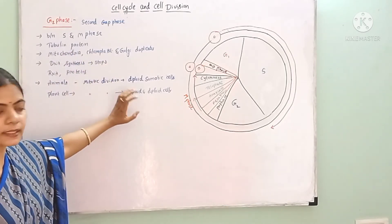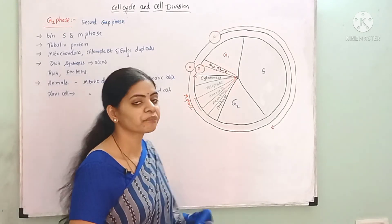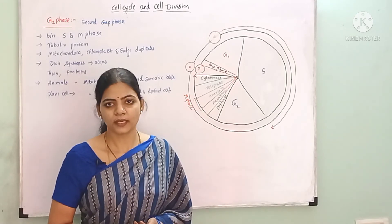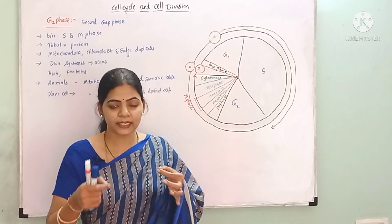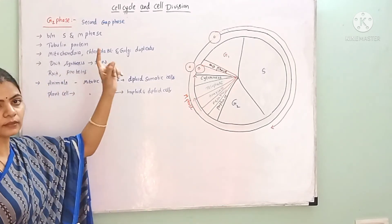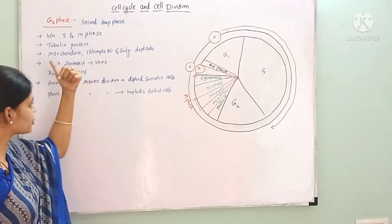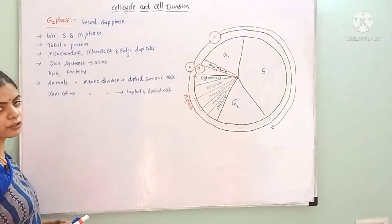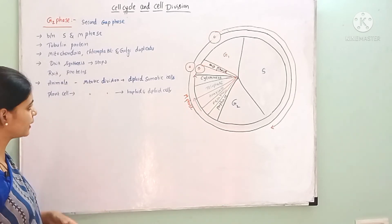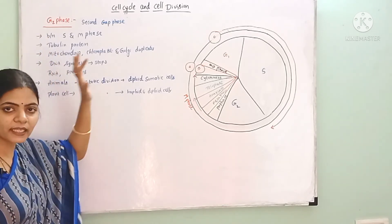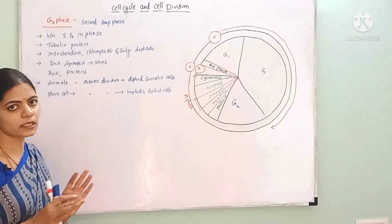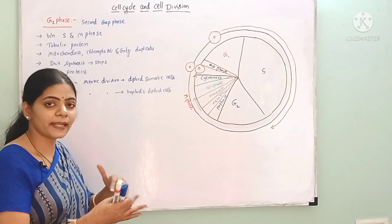In G2 phase, tubulin protein synthesis occurs. Tubulin protein is needed for spindle fiber formation. Chromosomes attach to the spindle fibers during cell division. In this phase, mitochondria, Golgi apparatus, and chloroplasts are duplicated. DNA synthesis stops but RNA and protein synthesis continue.